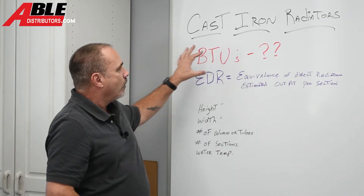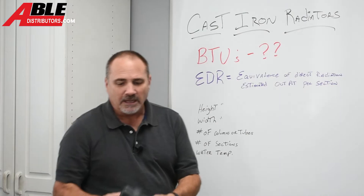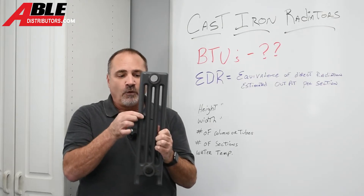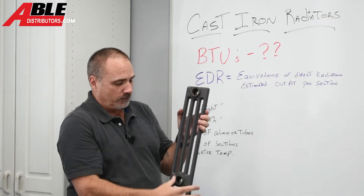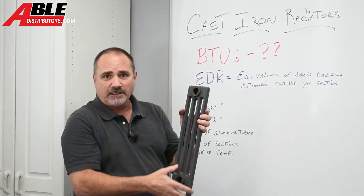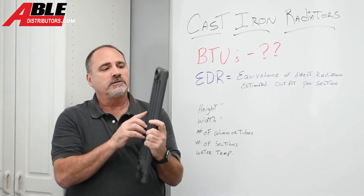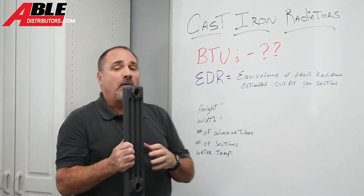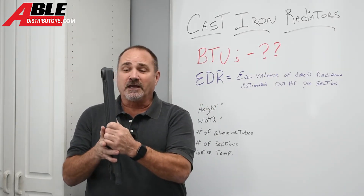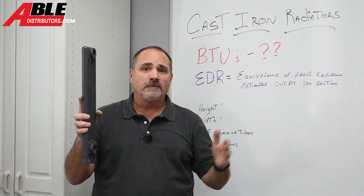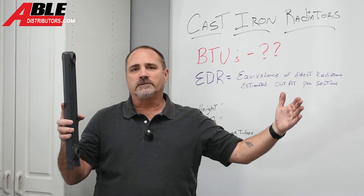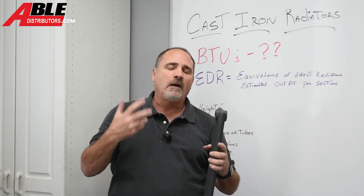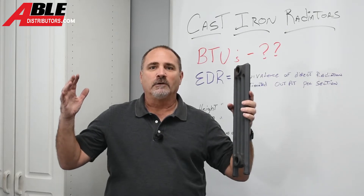Getting back to knowing the BTUs of each section — I couldn't find this exact one on a chart, so this is four tubes, 19 and a half inches wide, five inches deep. I'll look on the chart to see what it is, and it'll give me a number for the EDR. I multiply that EDR by the table and I get the BTUs this piece puts out. If this radiator is 30 or 40 inches long, it might have 20 or 25 of these sections, and you can build up to see how many BTUs that cast iron radiator puts out.